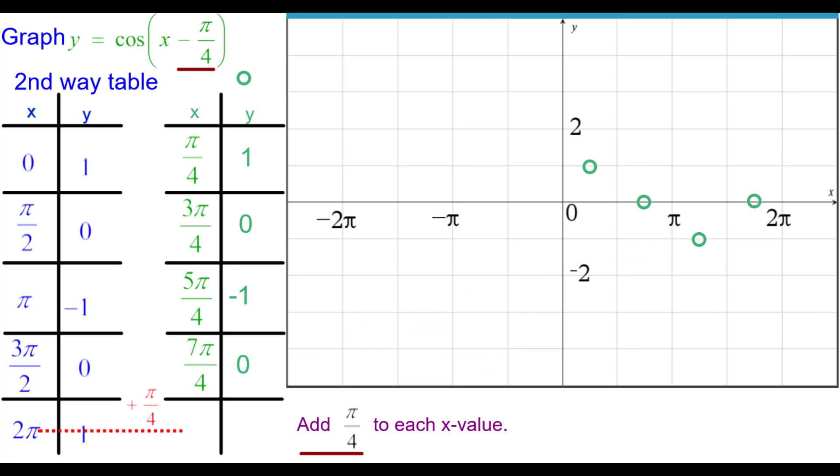And finally 2 pi, add a quarter to that, and we get 2 and a quarter pi, which is really (9 pi over 4, 1). Connect those points as a cosine wave.